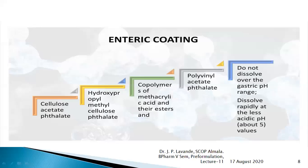These enteric coating agents do not dissolve over the acidic pH range of the stomach, but they will dissolve rapidly at a less acidic pH — that is, at about pH 5.